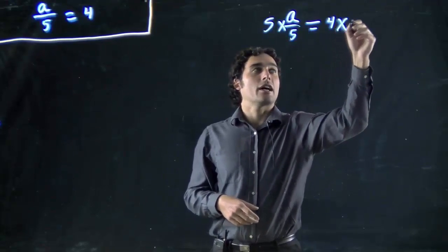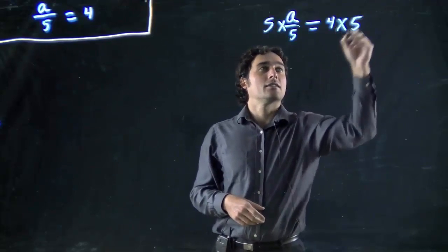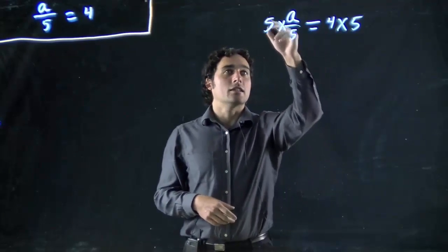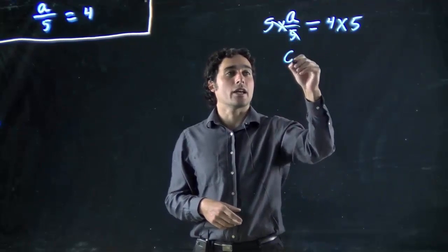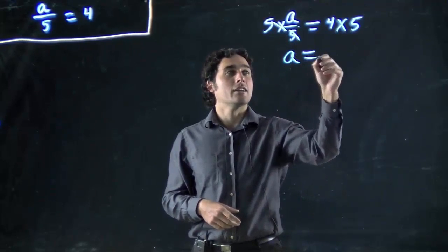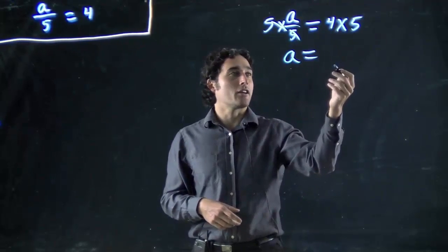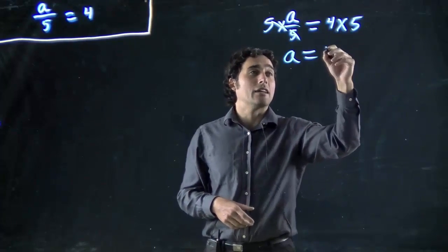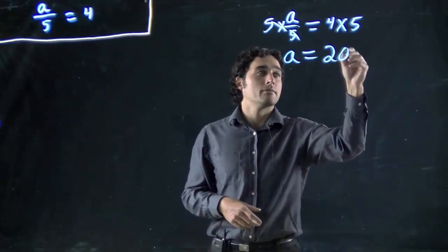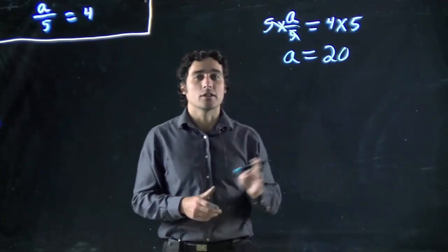And again, I've got to do that to both sides. This will cancel out. We're left with a on this side, and then we've just got to go 4 times 5 is 20. And we're good to go.